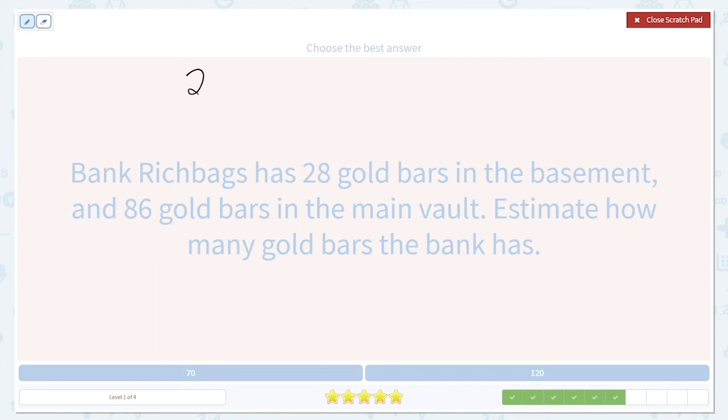So again, we're adding the numbers 28 and 86. And we're estimating. So we need to round them. 28 rounds up to the nearest 10 because 8 is more than 5. So 30.